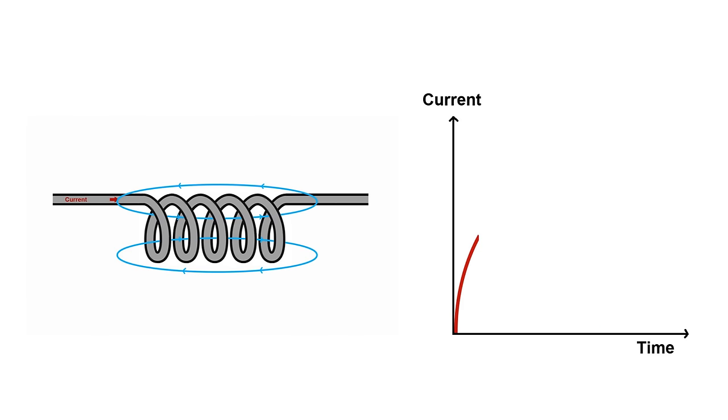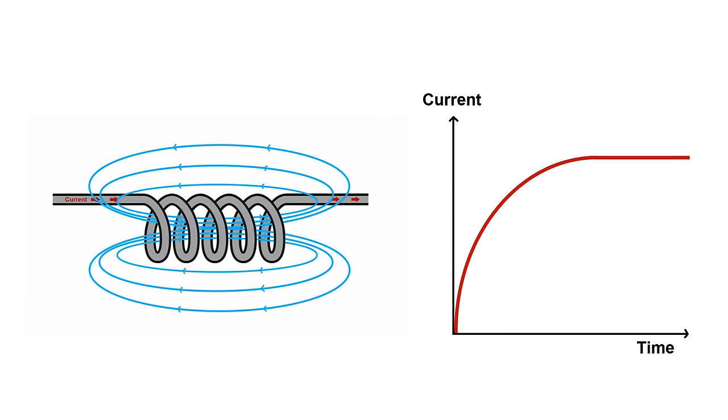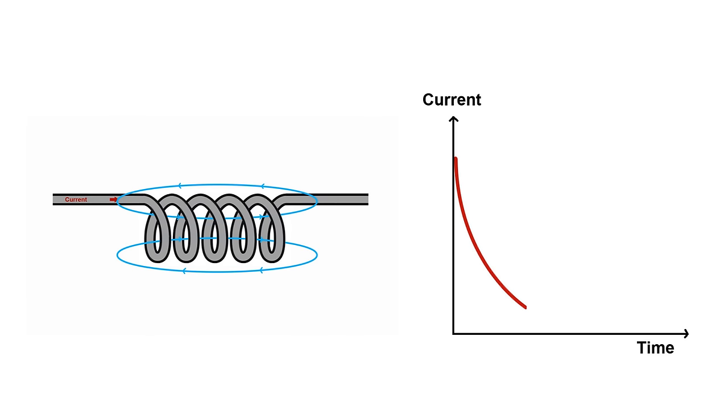You know how capacitors store energy in the form of a static charge and resist sudden changes in voltage? Well, inductors are very similar. They store energy in the form of a magnetic field and resist sudden changes in current.